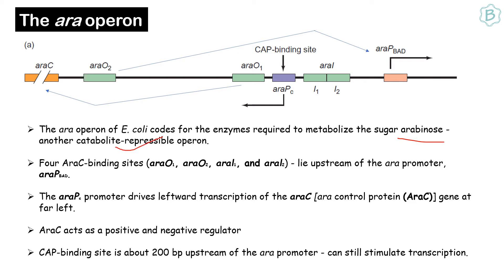As you can see, there are two operator regions: araO1 and araO2. The araO1 operator regulates the transcription from the araE gene, and araO2 regulates transcription led by the araP BAD promoter.